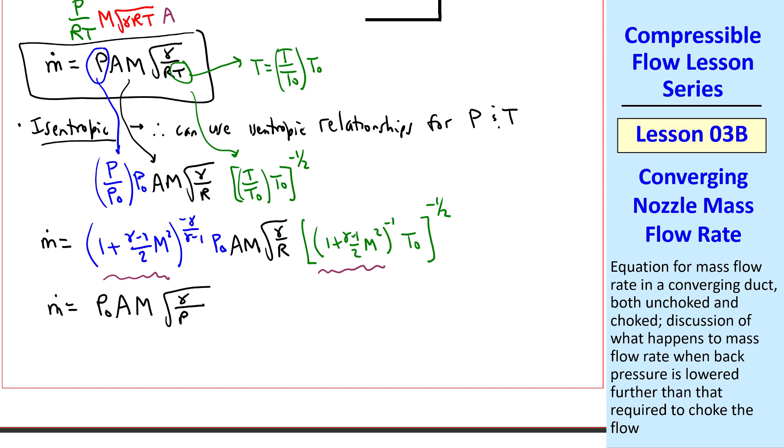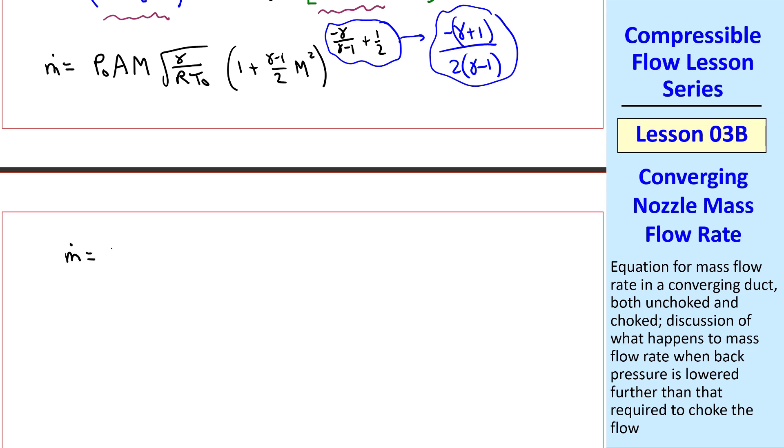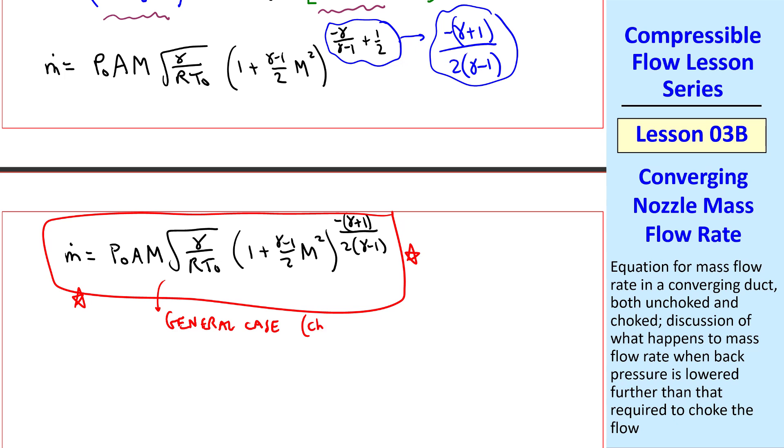So we get m-dot equals P₀ AM √(γ/RT₀), where I put this T₀ here, and then this term in parentheses. And combining the exponents, I'll shift this down a little bit to give me room for my exponent, which is -γ/(γ-1) from here plus one-half, which is the product of these two. Finally, a little bit of algebra on this gives us -(γ+1)/(2(γ-1)). Thus finally we can write m-dot equals P₀ AM √(γ/RT₀) [1 + (γ-1)/2 M²]^(-(γ+1)/(2(γ-1))). This is our expression for m-dot for the general case, in other words choked or unchoked, and I called this equation 4 in my notes.